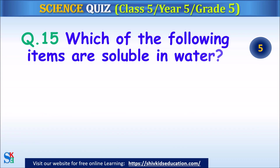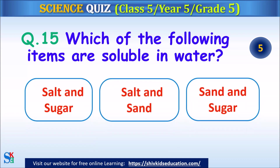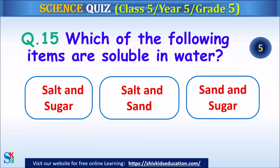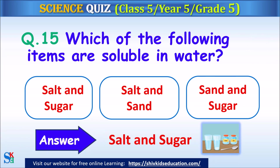Question 15: Which of the following items are soluble in water? Salt and sugar, salt and sand, or sand and sugar? The answer is salt and sugar.